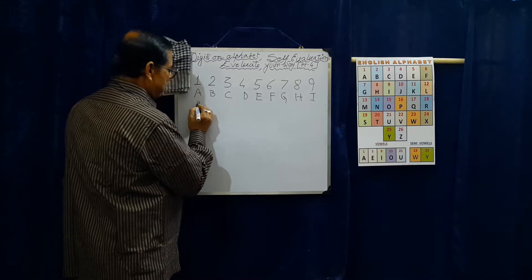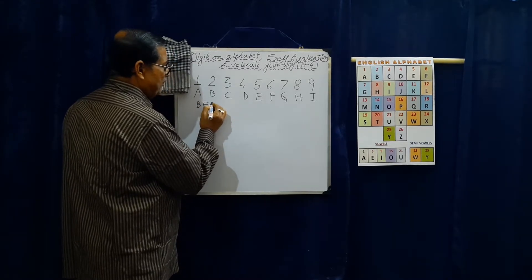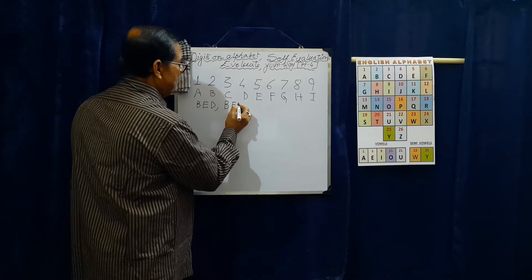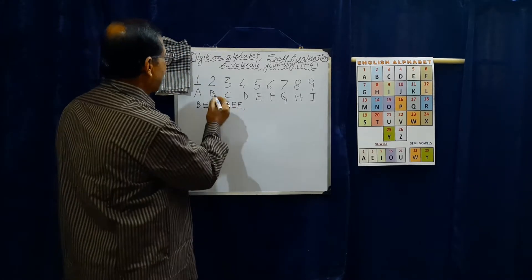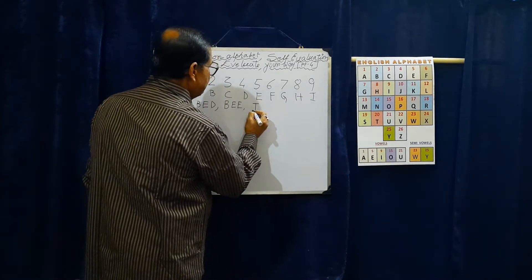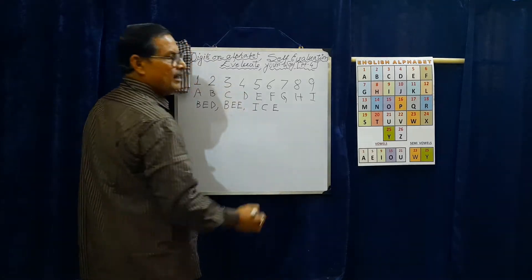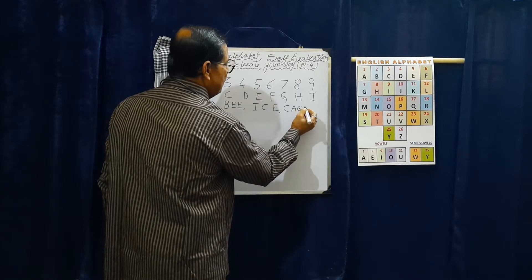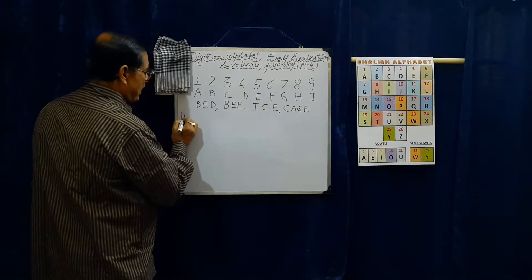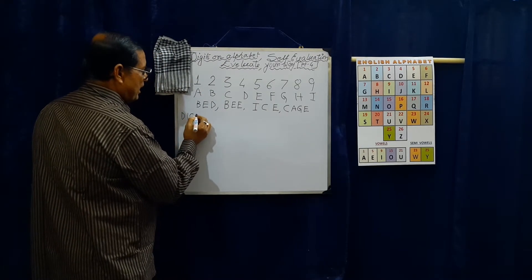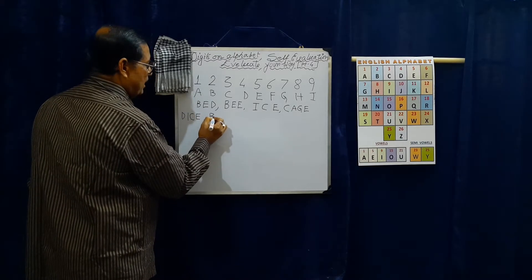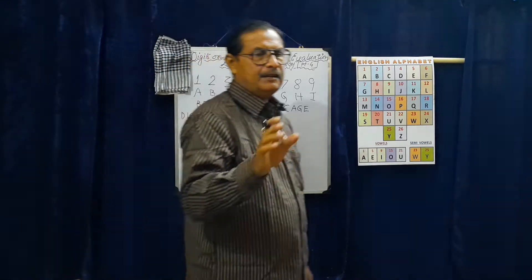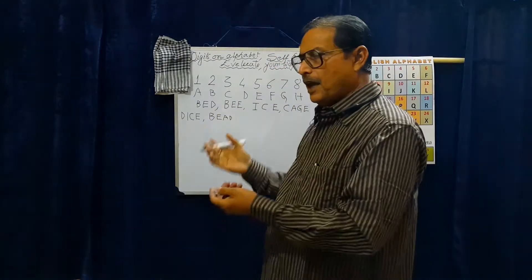Let's see how many words we can make. We can make BED, we can make BEE, we can make BICE, we can make DICE, we can make BEAD. If you can think of any more words with these letters, you can make those too.